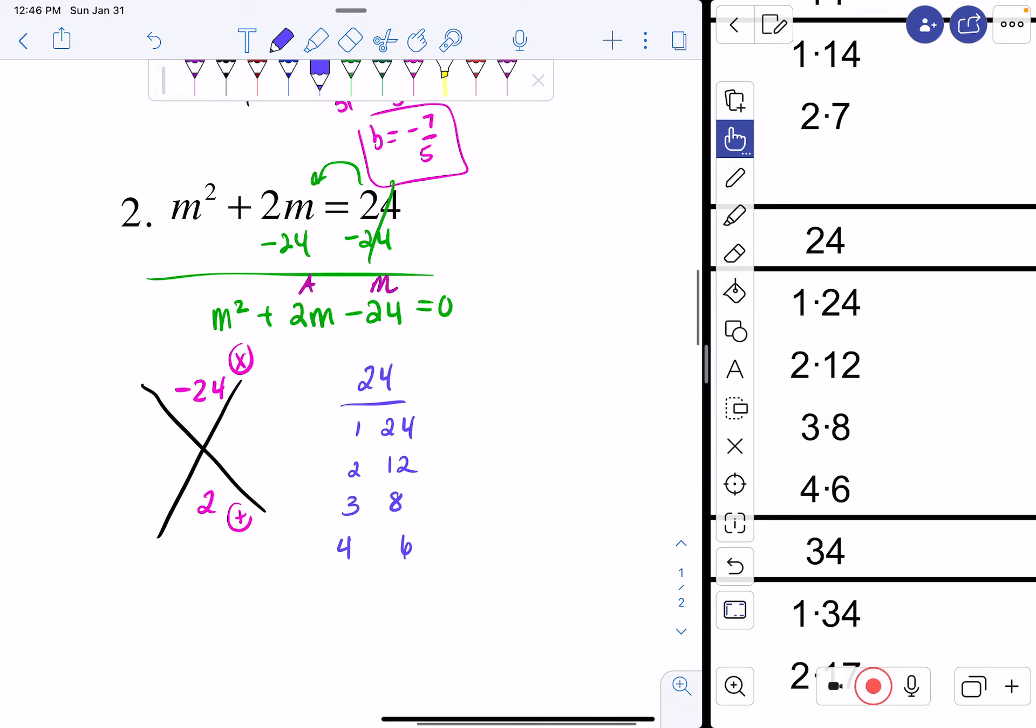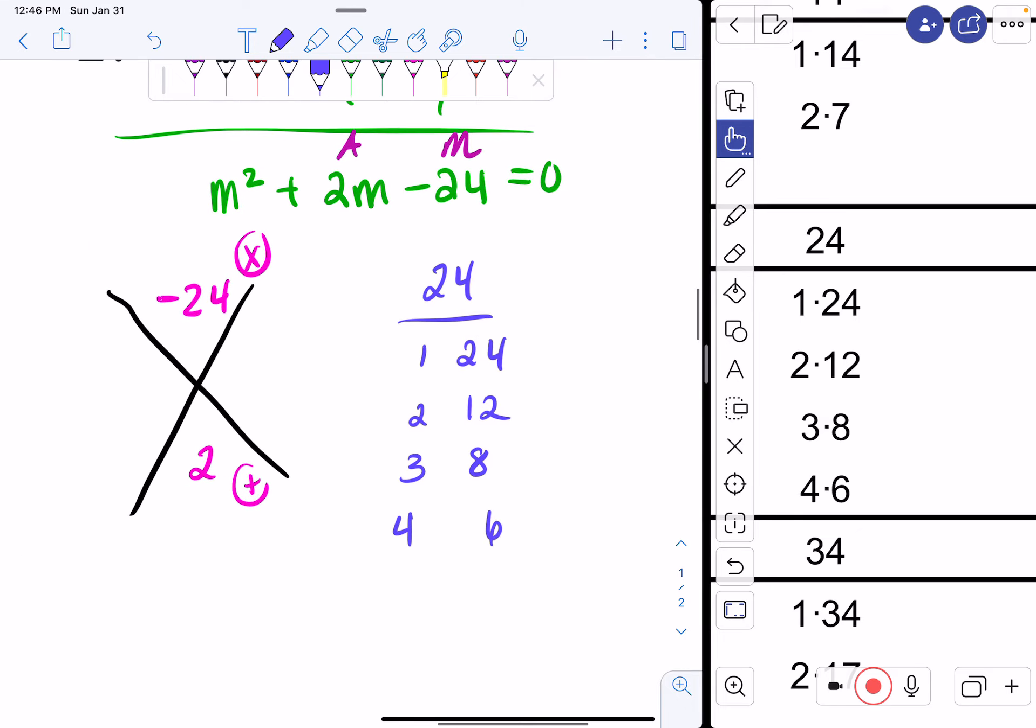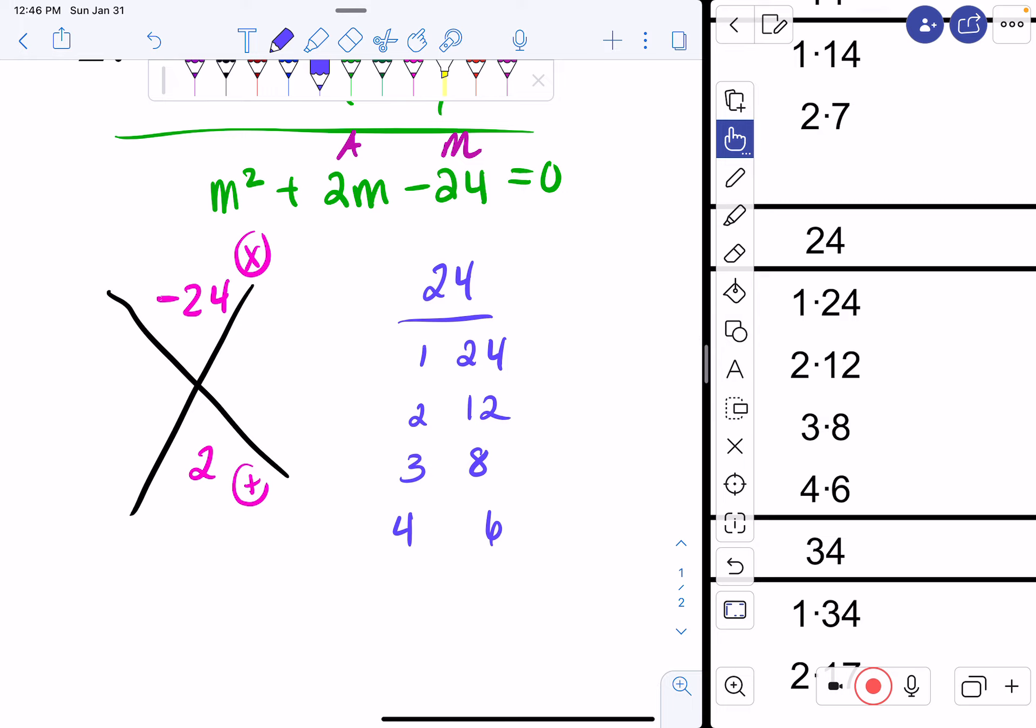I think that my 4 and my 6 will work. So I'm going to try 4 and 6. Here's the thing. 4 times 6 is 24, not a negative 24. So I want a negative. So what I'm going to do is I'm going to make one of these a negative. So I'm going to make my 4 negative. Negative 4 times 6 is negative 24. That works. And negative 4 plus 6 is 2. So this works.